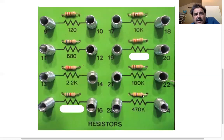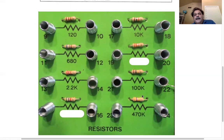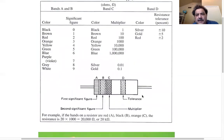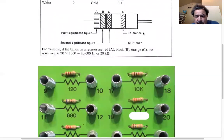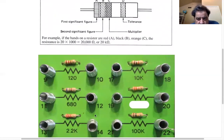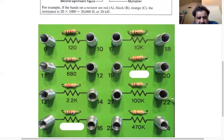So that's the color code. I didn't talk about the tolerance. The tolerance is silver, gold, or red. I think all of these are gold. They all look gold on this. You can see there's a bit of gap between the first three bands and this last band.